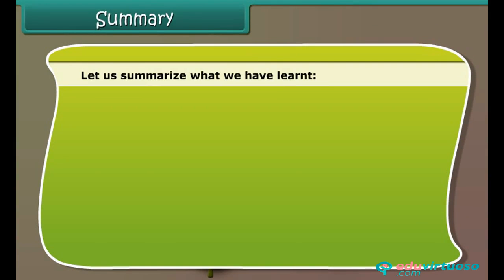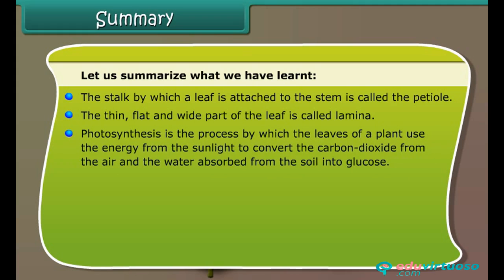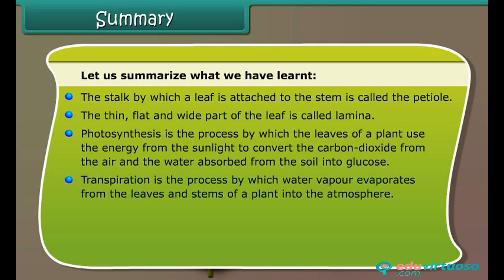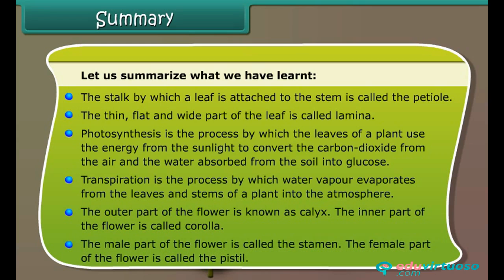Let us summarize what we have learned. The stalk by which a leaf is attached to the stem is called the petiole. The thin, flat and wide part of the leaf is called the lamina. Photosynthesis is the process by which the leaves of a plant use energy from sunlight to convert carbon dioxide from the air and water absorbed from the soil into glucose. Transpiration is the process by which water vapor evaporates from the leaves and stems of a plant into the atmosphere. The outer part of the flower is known as the calyx; the inner part is called the corolla. The male part of the flower is called the stamen; the female part of the flower is called the pistil.